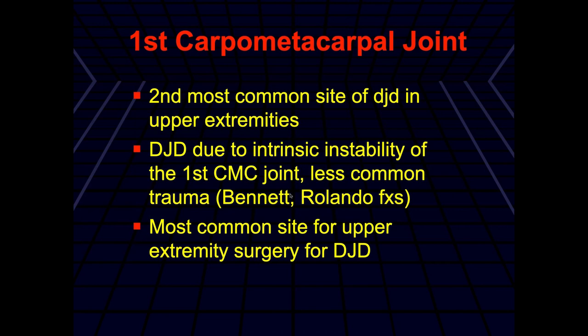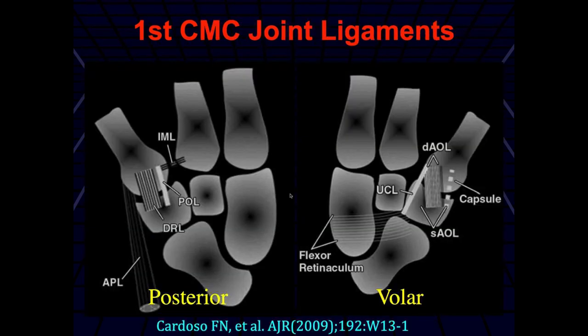Let's talk about the first carpal metacarpal joint. It's the second most common site of degenerative joint disease in the upper extremities, due to intrinsic instability of the first metacarpal CMC joint. It's also an area where you can get different fractures such as the Bennett fracture and the Rolando fracture. And it's the most common site in the upper extremity for surgery for degenerative joint disease, because the thumb is so important for function of the hand.